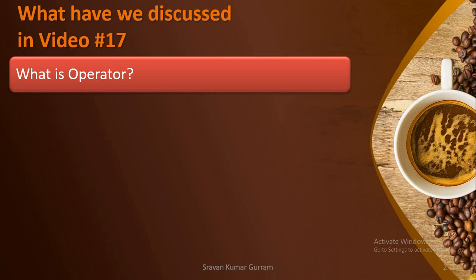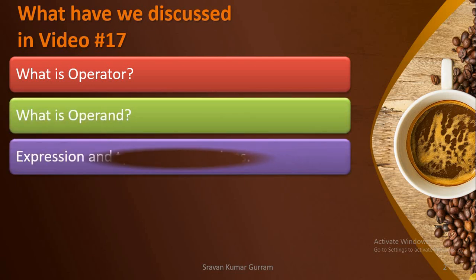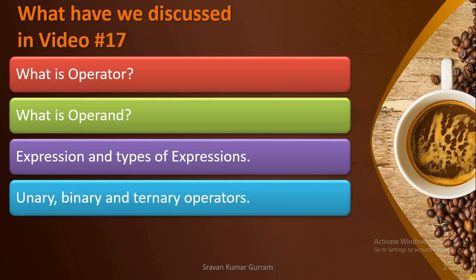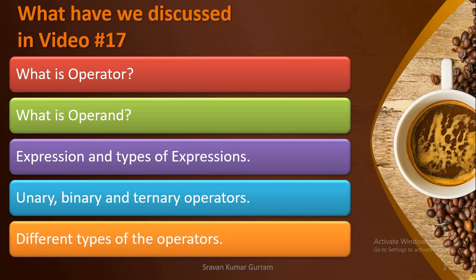What is an operator? What is an operand? Expression and types of expressions. What are unary, binary and ternary operators? Different types of operators. We covered all these points in detail in the last video. If you haven't watched that, please watch that for better understanding of this video.